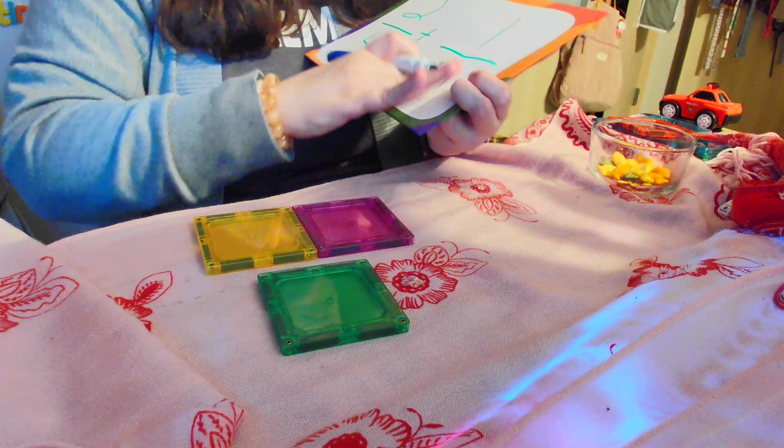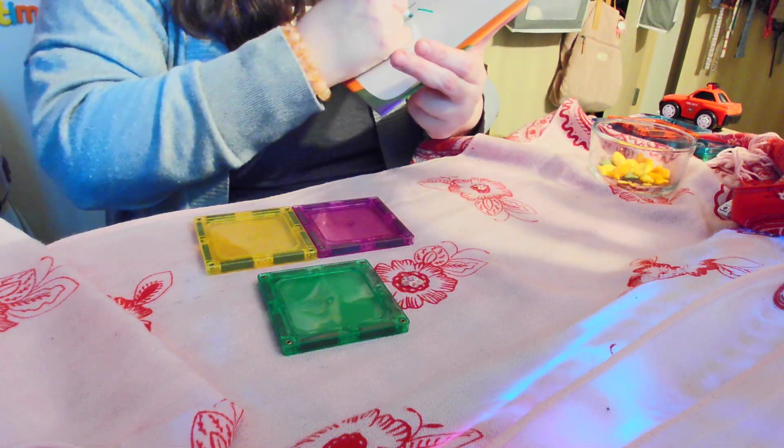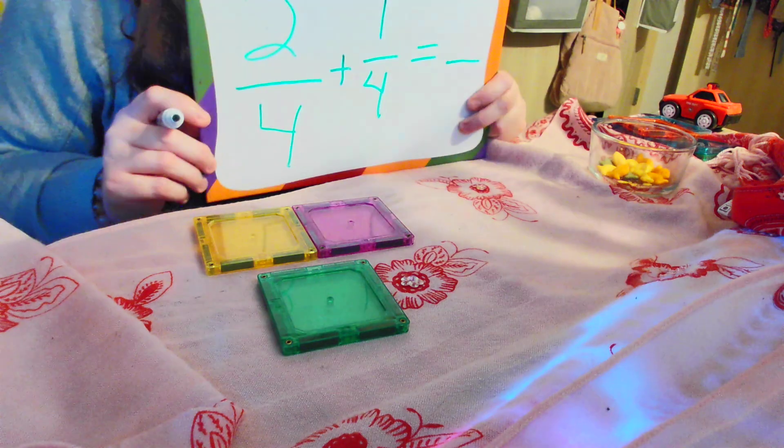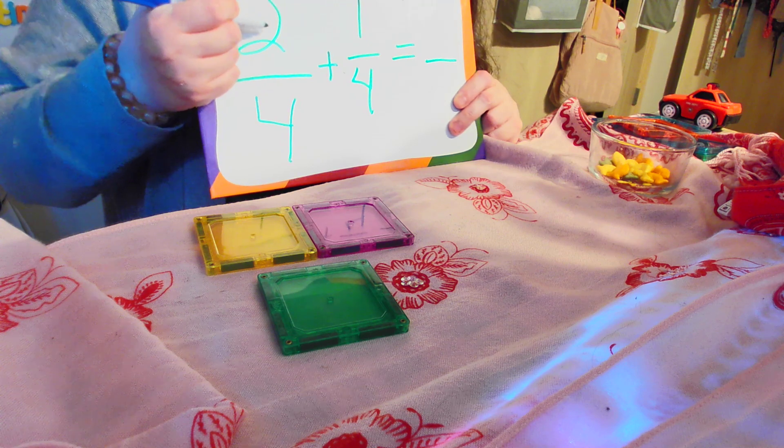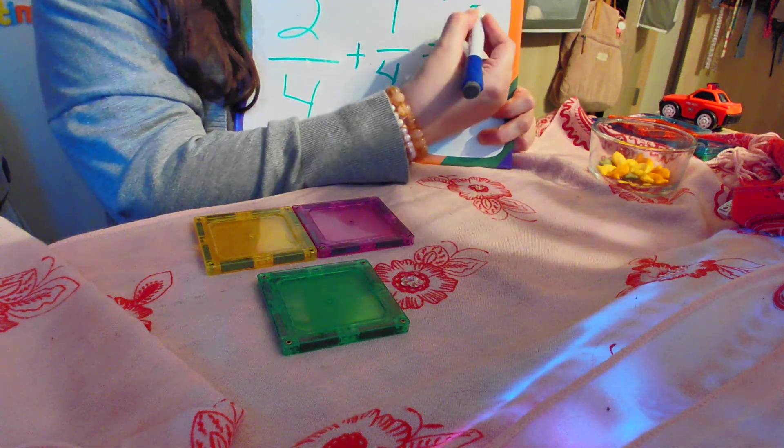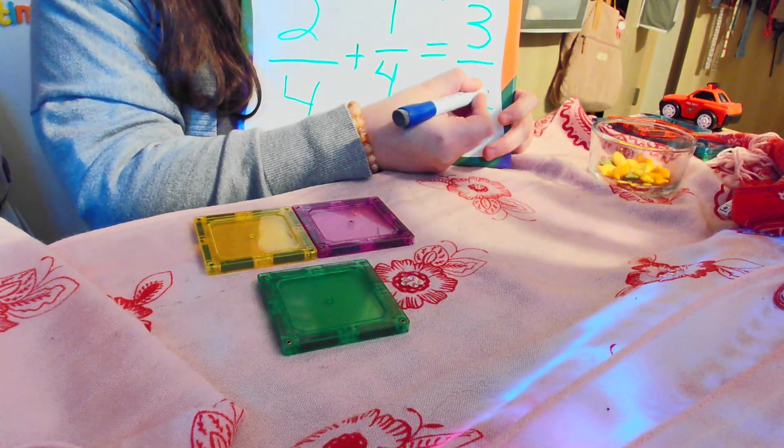Because two plus one equals three. So I'm going to move this over on my board so you can see it a little better. So if I had two pieces plus one piece that I'm playing with, I now have three-fourths.